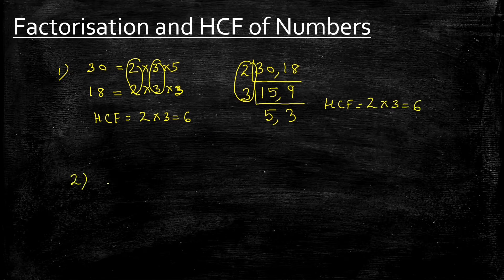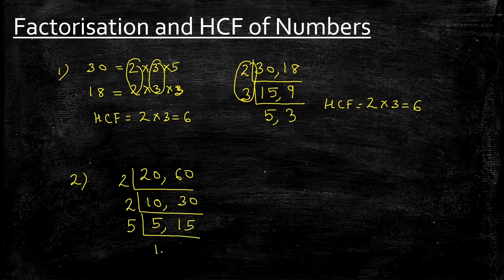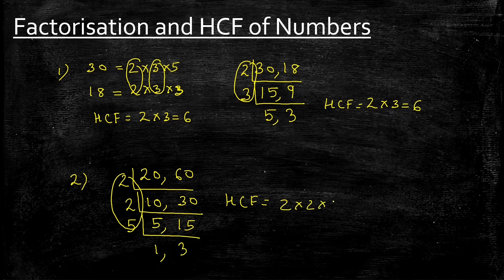Let's try one more example: 20 and 60. By looking at the numbers, we can find the HCF is 20. Using the division method: dividing by 2 gives 10 and 30, then by 2 again gives 5 and 15, then by 5 gives 1 and 3. I stop here, so the HCF is 2 × 2 × 5, which equals 20.